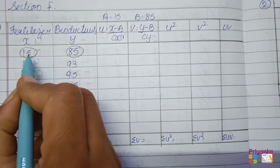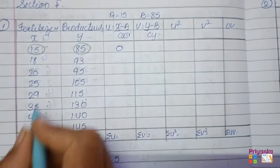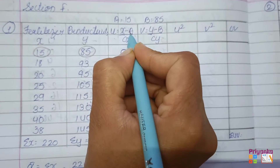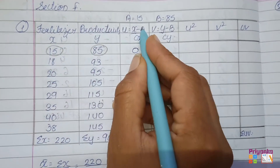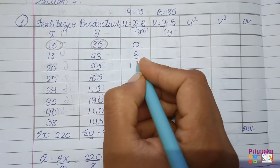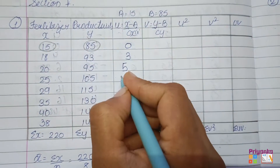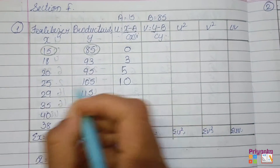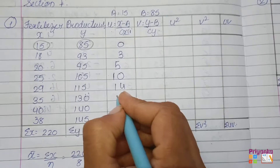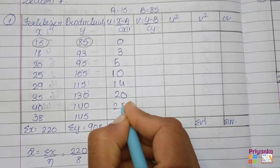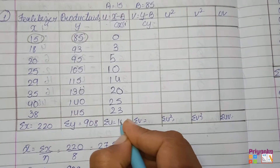Now subtracting using the U formula, X minus A (which is 15): 15 minus 15 is 0, 18 minus 15 is 3, 20 minus 15 is 5, 25 minus 15 is 10, 29 minus 15 is 14, and continuing with the same process: 20, 25, 23. The total of this U column is 100.